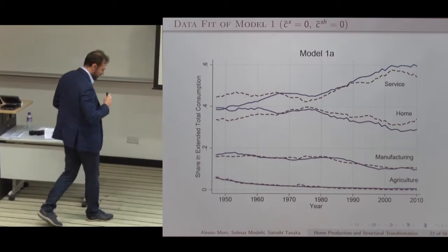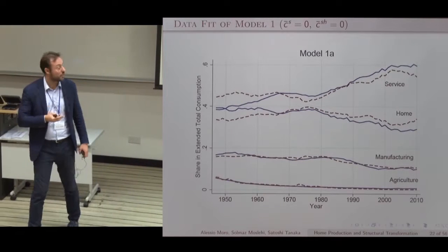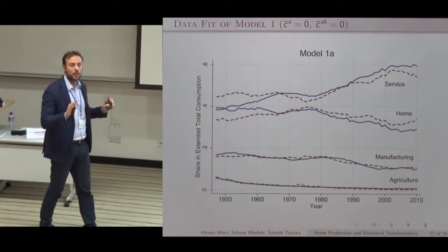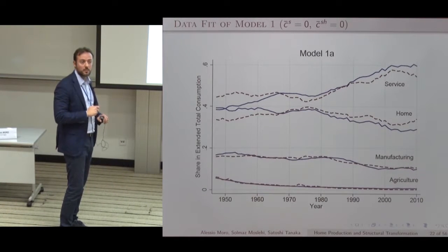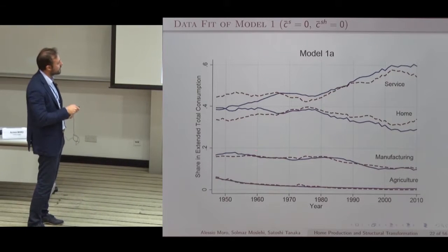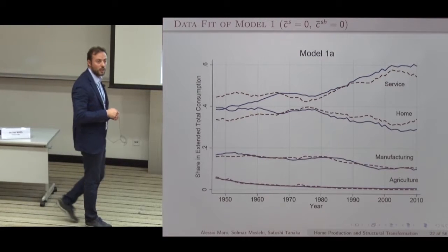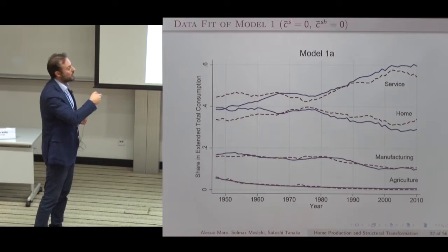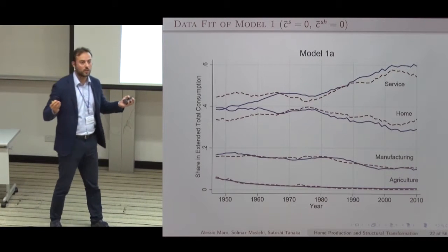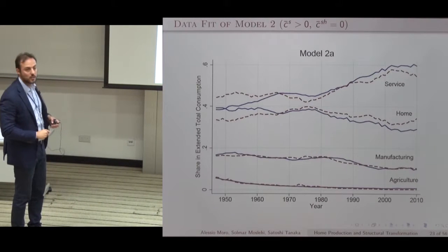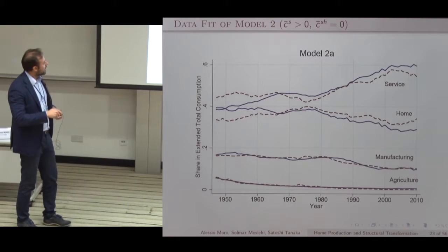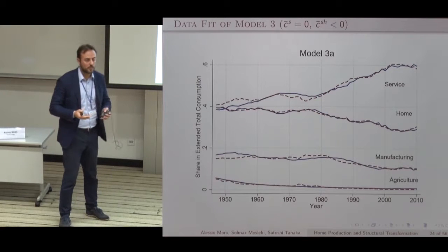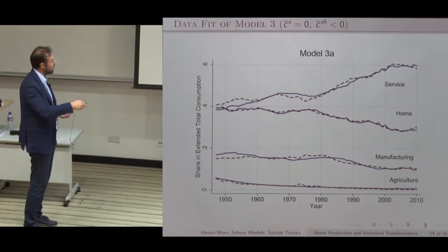Here is the graphical fit. In the first model — with non-homotheticity only on agriculture — the visual fit is not great: okay for manufacturing and agriculture, but not great for home and market services. In the second model, adding back C_S-bar — the common term in all structural transformation models with market services — there is little change in fit. In the third model, with differential non-homotheticity between home and market, the fit is much better visually, which is confirmed by the estimation results.